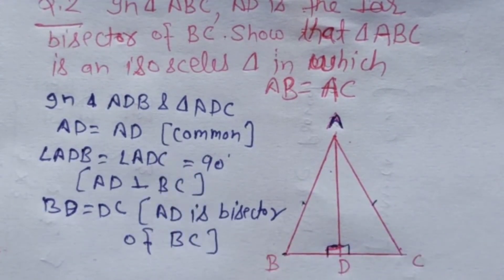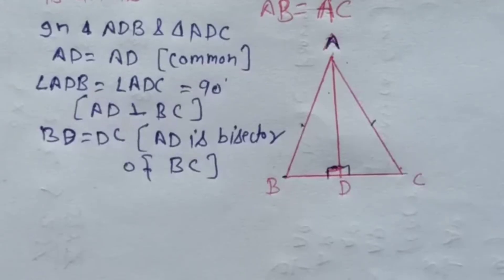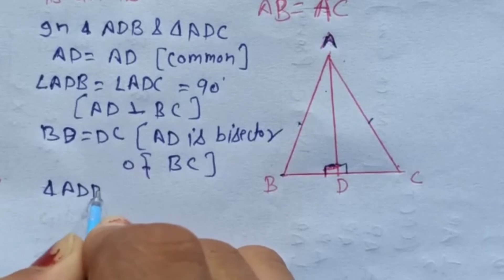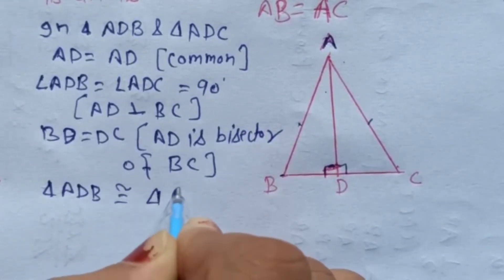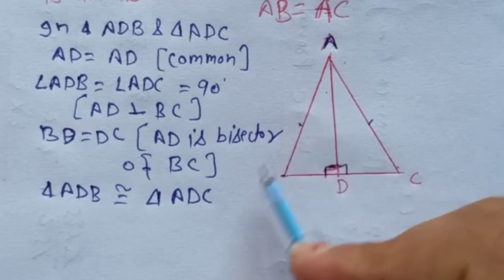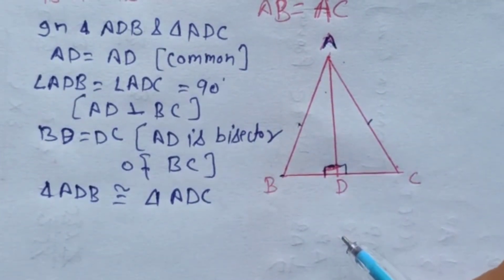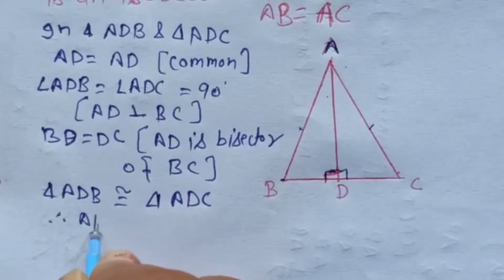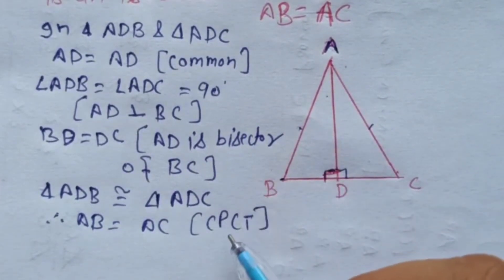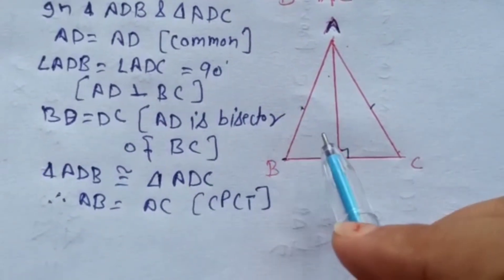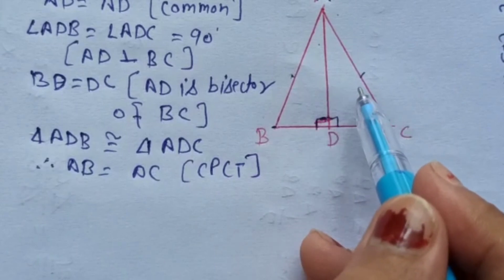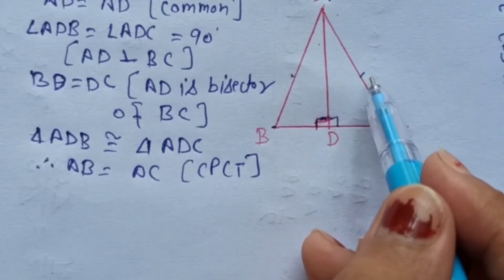So hamari teen cheezein equal ho gayi. To hum inhe congruent likh sakte hain: Triangle ADB is congruent to triangle ADC. Agar hamara dono triangles congruent ho gayi, to hum likh sakte hain: AB equal to AC — by CPCT. Kyunki agar do triangles congruent hain to unki corresponding sides equal ho jaati hain. Agar hamari dono sides AB aur AC equal hain to isko isosceles prove kar sakte hain.